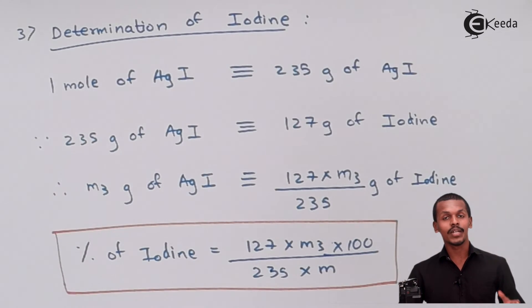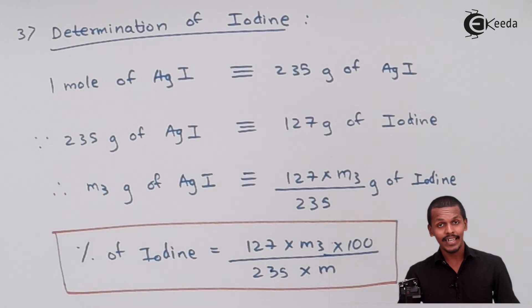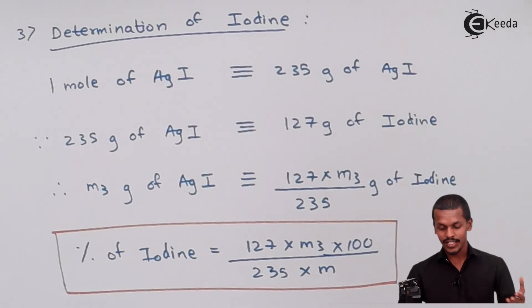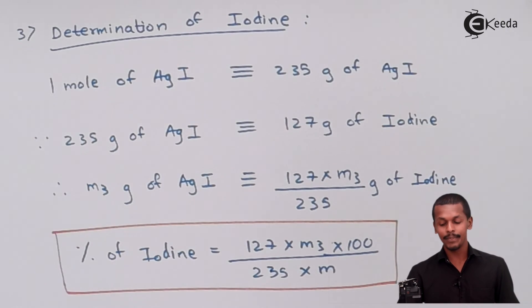This was a very easy method to determine the percentage of halogens present in an organic compound, using the Carius method. Thank you friends for watching this video. I hope you understood it clearly and now know how to determine the percentage of the halogen atom present in an organic compound. Please share this video with your friends and don't forget to subscribe to the channel.